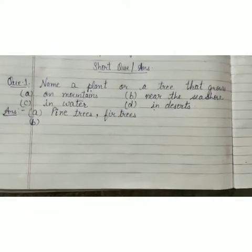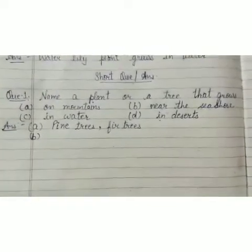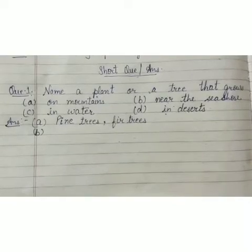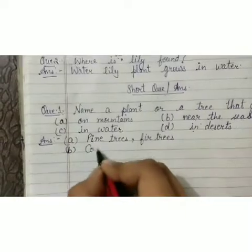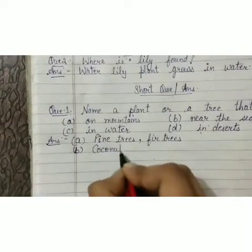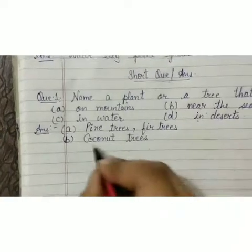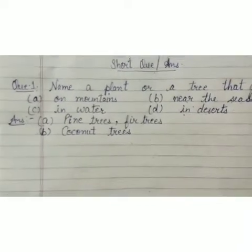And then write the answer of B: name a plant or tree that grows near the sea shore. Answer: coconut trees — C-O-C-O-N-U-T — T-R-E-E-S — coconut trees.